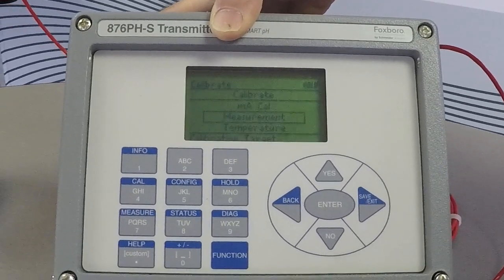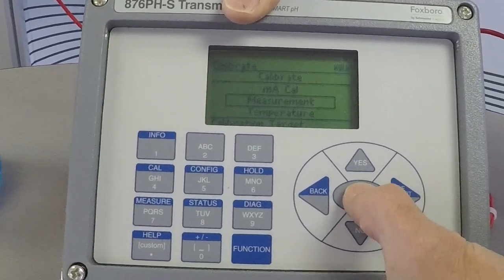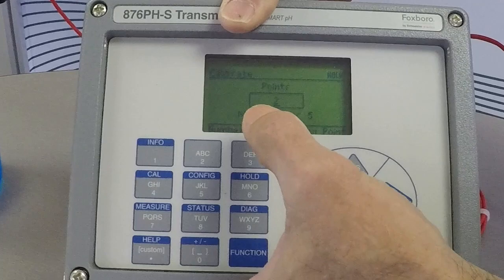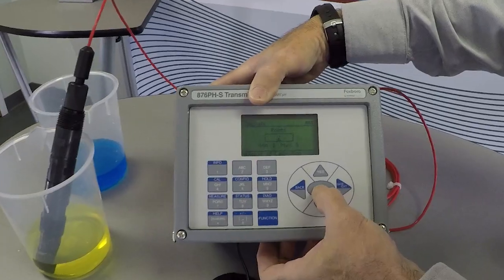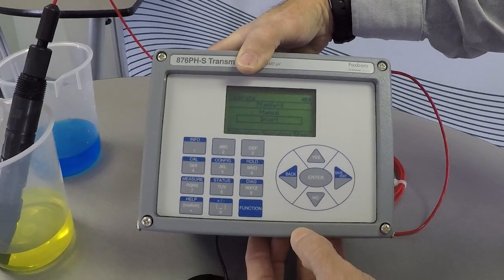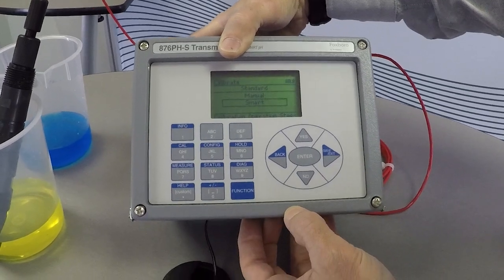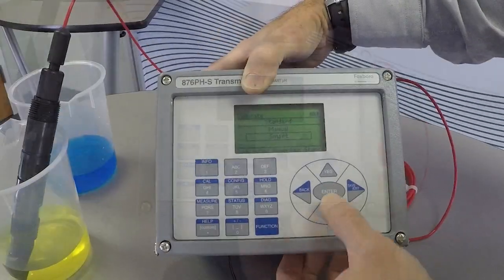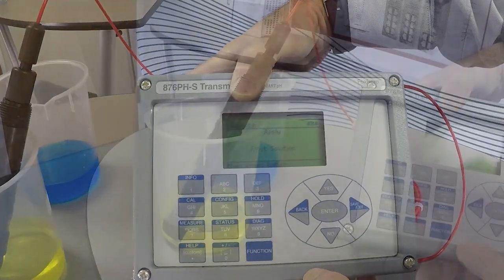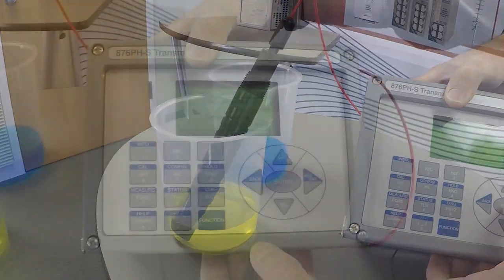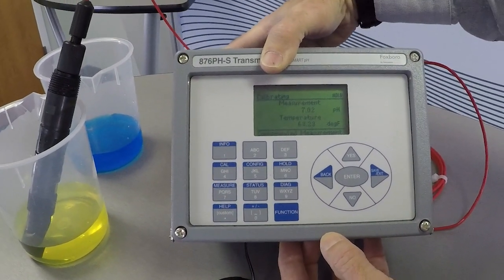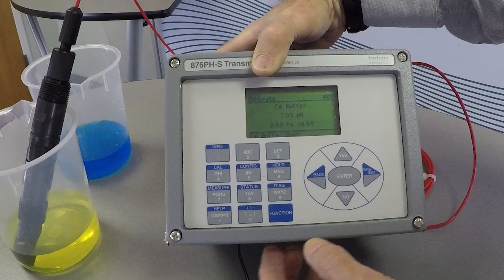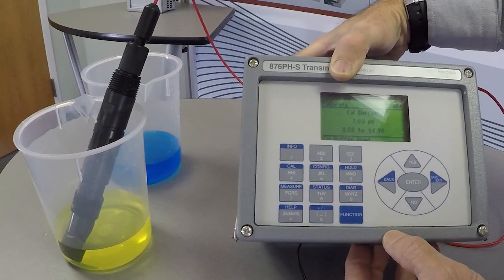And you have options to do different calibrations but we're going to go with measurement and we're going to ask to do two points. Select two points and we are going to go with the smart so we'll select smart. It goes out, it's reading the probe and right away it's settled on 7 pH so it's smart, it knows that.